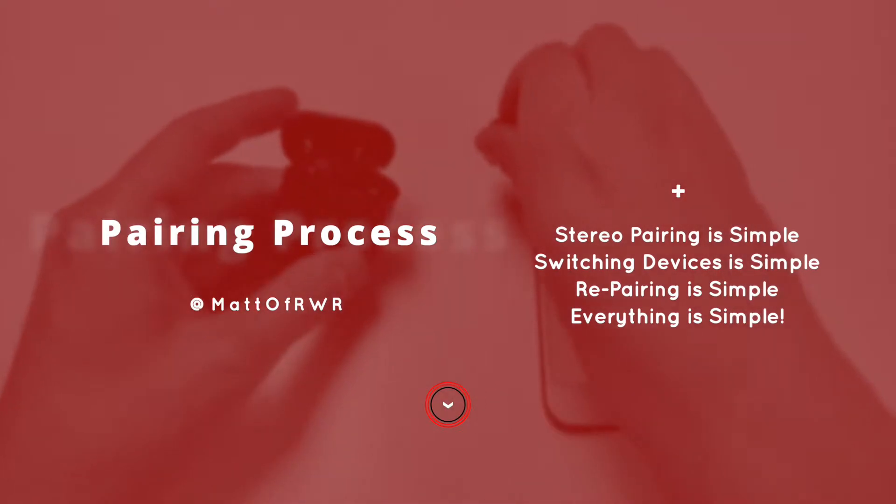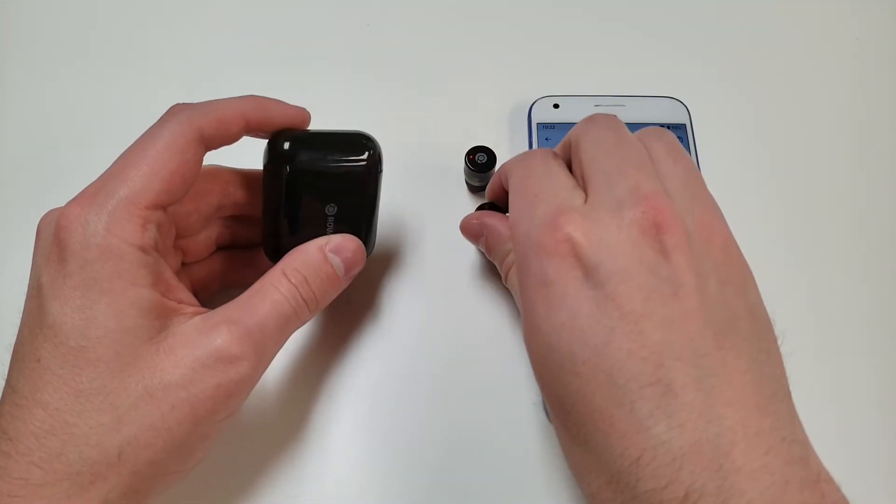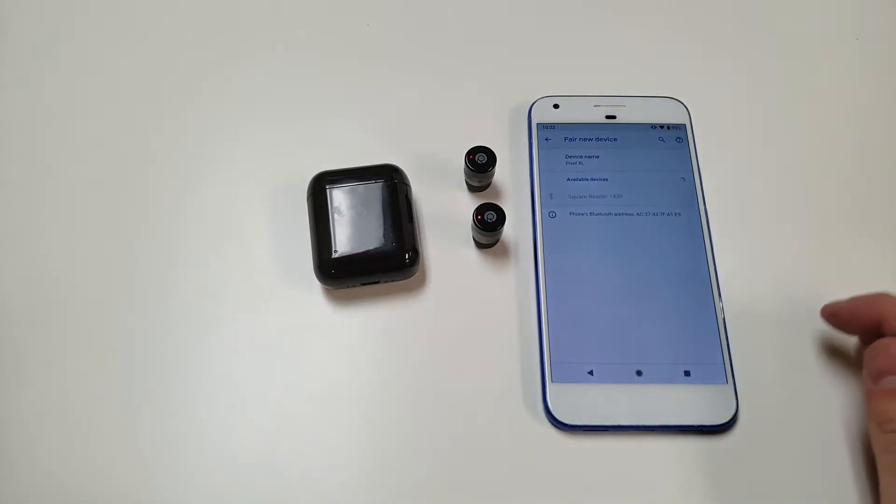The pairing process is stupid easy. Like it's crazy. Literally, just take the right bud out first, go into the Bluetooth, select Roken, done.